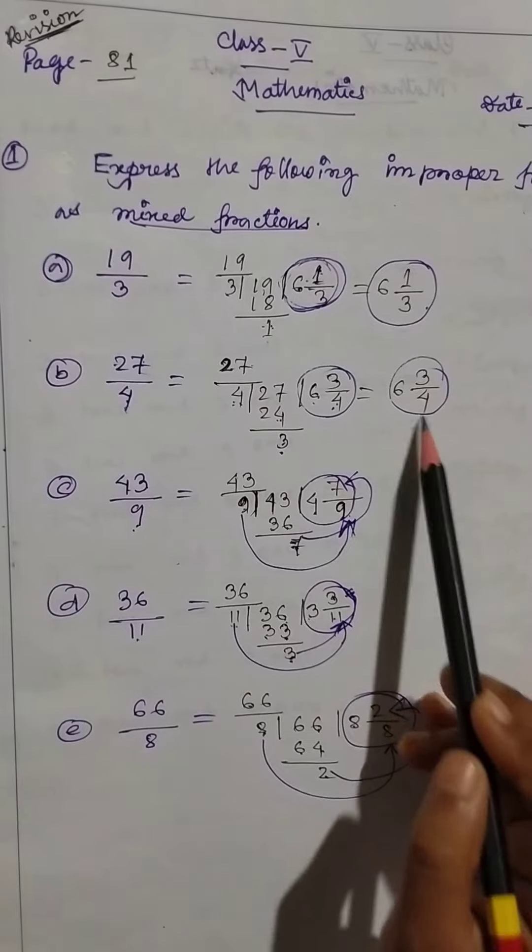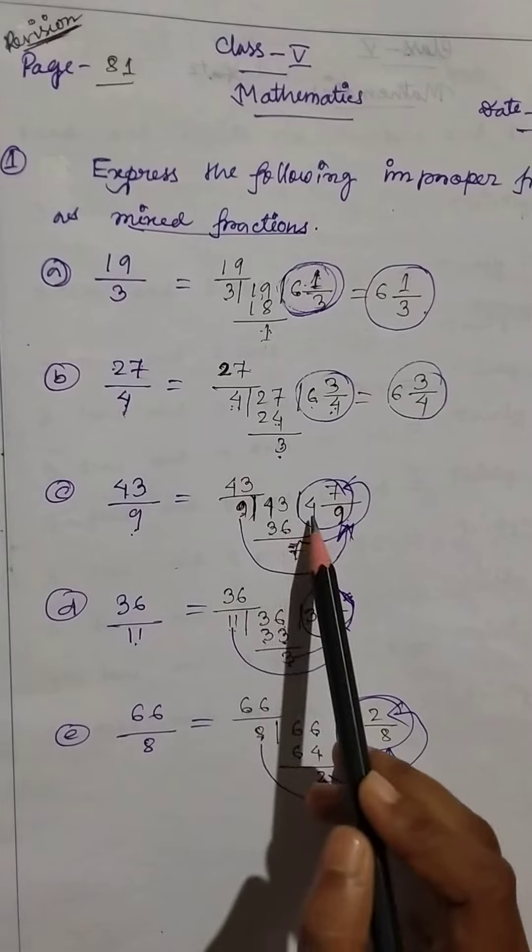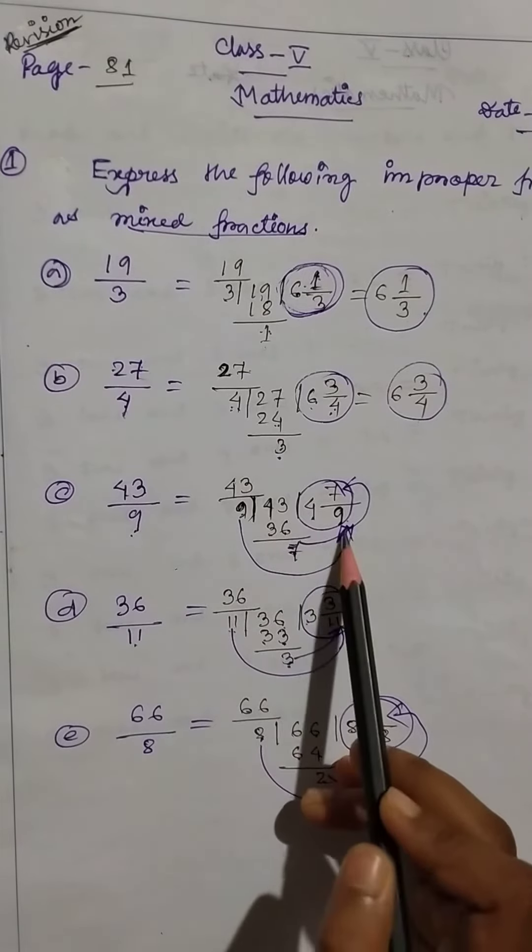So 6 3 by 4. Then 43 by 9. Okay, so 43 by 9 hole 4, then 9 here and 7 here.